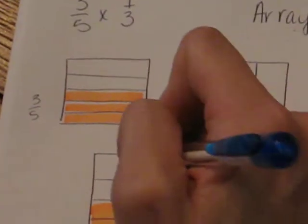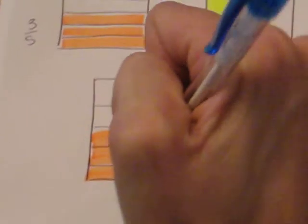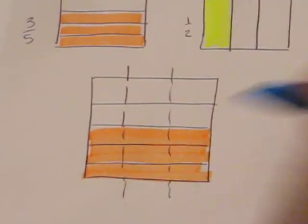So now what we're going to do is we're going to take our two models and we're going to overlap them. So this one I'm going to cut it into thirds. And I'm going to shade one out of three. And you can see that I just overlapped the orange with the yellow.